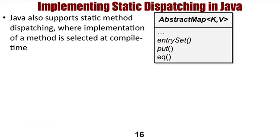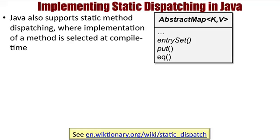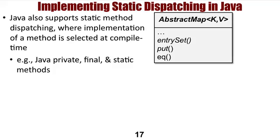In addition to supporting polymorphism via dynamic method dispatching, Java also supports static method dispatching, where the implementation of a method is selected at compile time, rather than at runtime. The JVM uses this technique to dispatch Java's private, final, and static methods.